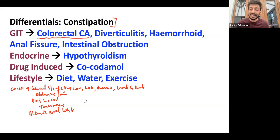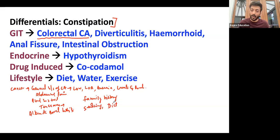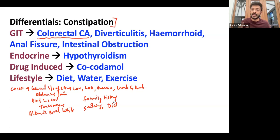Then move to past medical history. Family history is very, very important — don't miss that. When it comes to lifestyle, smoking is important. Dietary history is very important; specifically ask about red meat and red processed meat, as that is really important in the context of colorectal cancer.